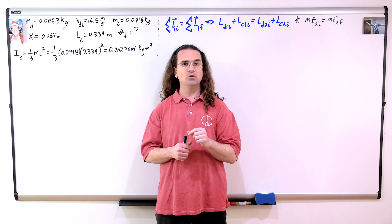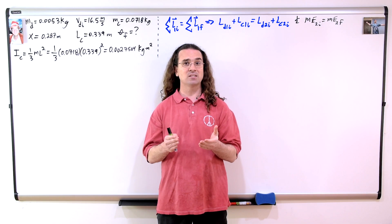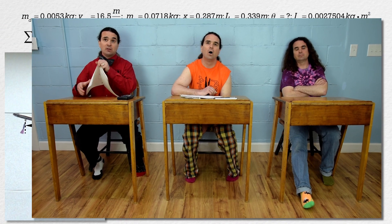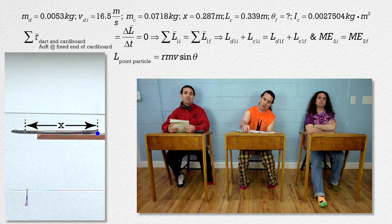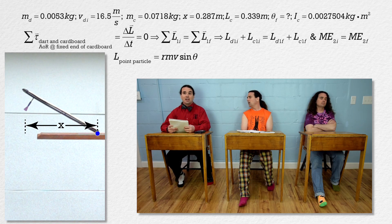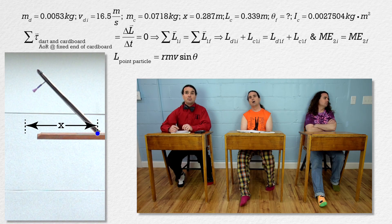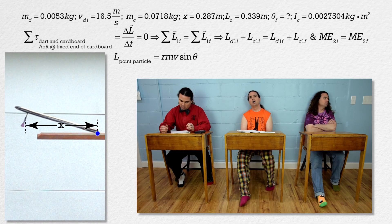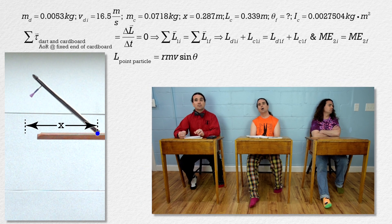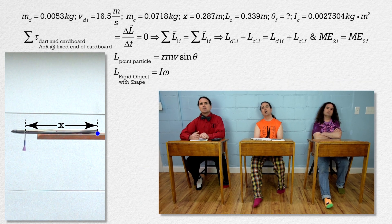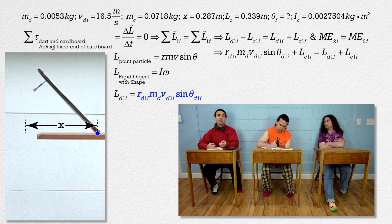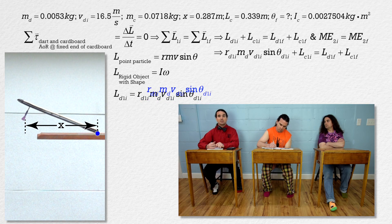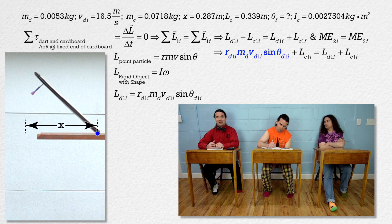Let's start with part one. Billy, remind me — what are the two general equations we have for the angular momentum of objects? The angular momentum of a point particle equals r, the vector from the axis of rotation to the center of mass of the point particle, times its mass times its velocity times the sine of the angle between the r vector and its velocity. The angular momentum of a rigid object with shape equals rotational inertia times angular velocity. For the dart before the collision, we use the point particle equation: r times mass of the dart times velocity of the dart times sine of the angle.